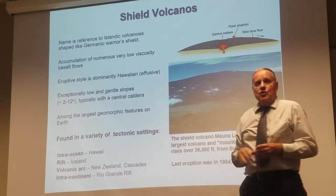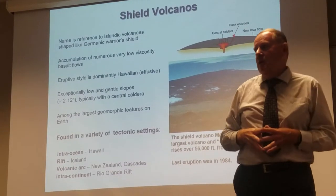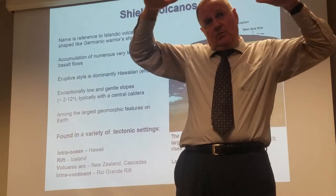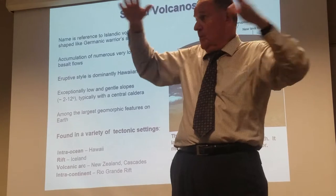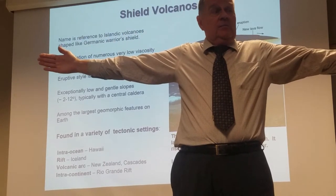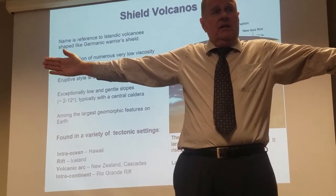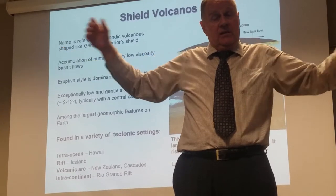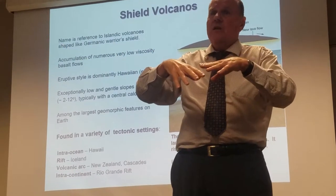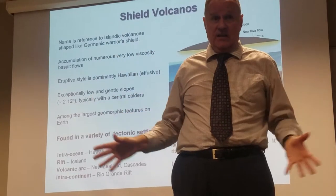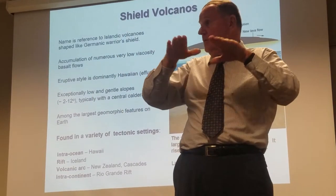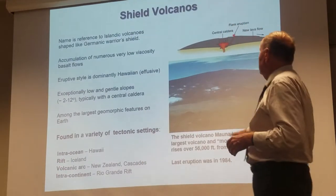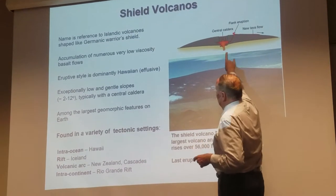Shield volcanoes are just the accumulation of many, many lava flows over a significant period of time. The reason they form that broad shield shape — not very high but very wide — is that they're typically basaltic lava with a relatively low viscosity. So the lava flows very easily over long distances, forming outward instead of upward.